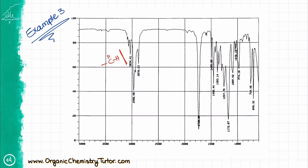And here is another example. Here, I'm seeing some signals from the SP2 hybridized carbon hydrogen stretches because those signals are a little bit above 3000. I'm also seeing the typical SP3 hybridized carbon hydrogen stretches, which I would be more surprised if I didn't see, honestly.